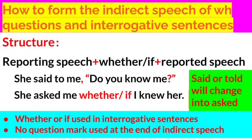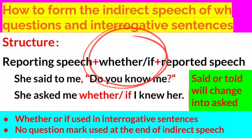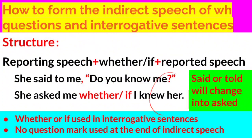Structure: reporting speech plus 'if' or 'whether' plus reported speech. For example: 'She said to me, do you know me?' becomes 'She asked me whether I knew her' or 'if I knew her.' So 'said' or 'told' will change into 'asked,' and 'whether' or 'if' is used in interrogative sentences. No question mark is used at the end of the indirect speech.